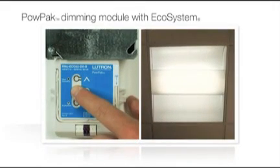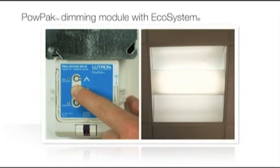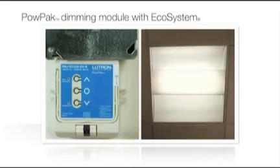When all controls have been associated, hold the O button on the PowPak Dimming Module with Ecosystem again for 6 seconds. You have now successfully associated each transmitting device to the PowPak Dimming Module.